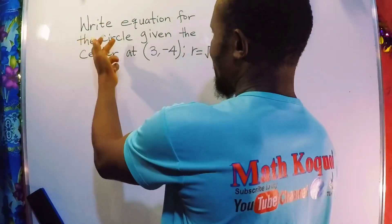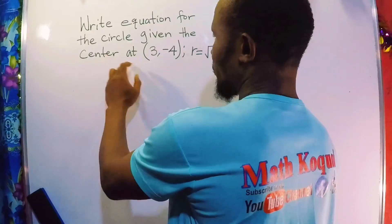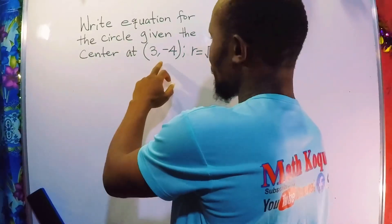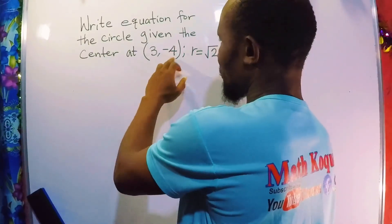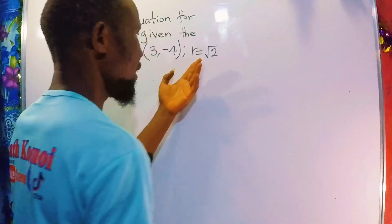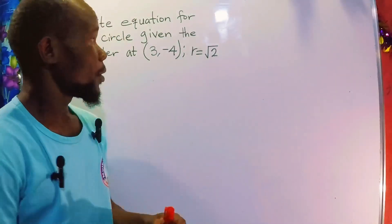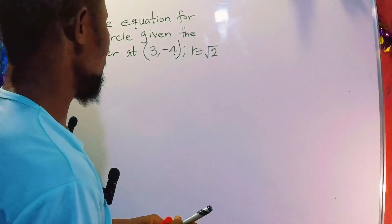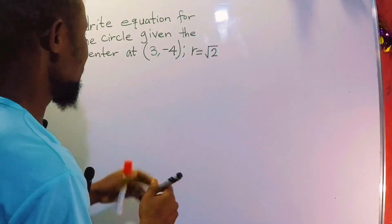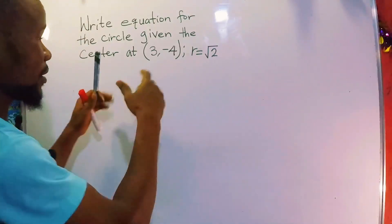Write the equation for the circle given the center at (3, -4) and the radius is the square root of 2. So we are going to do this. The first thing you do is to write the equation of a circle.